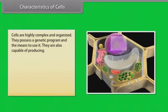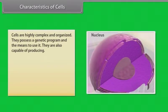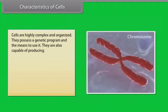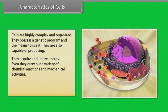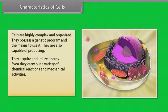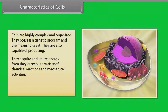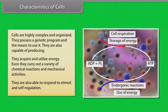Cells are highly complex and organized. They possess a genetic program and the means to use it, and are also capable of producing. They acquire and utilize energy, carry out a variety of chemical reactions and mechanical activities, and are able to respond to stimuli and self-regulation.